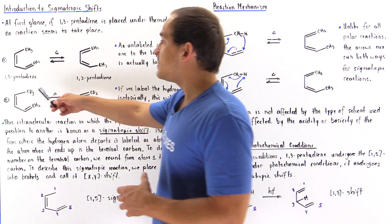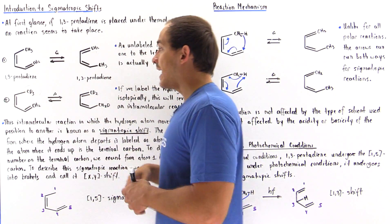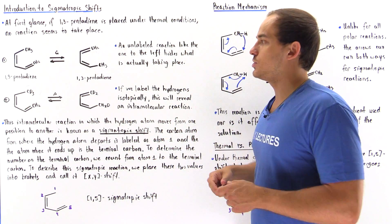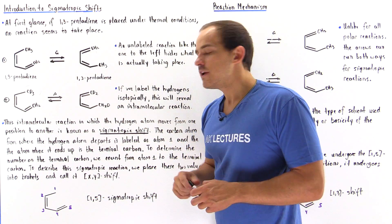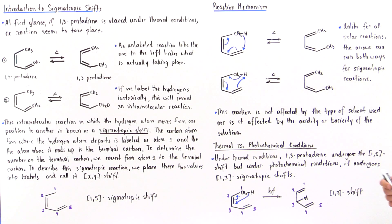So we said that if we take the 1,3-pentadiene and we place it under thermal conditions where the energy source is heat, our 1,5 sigmatropic shift will take place.